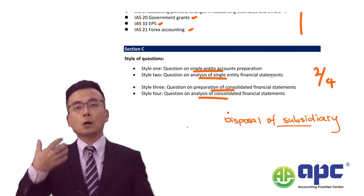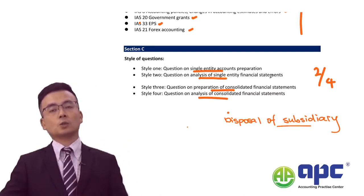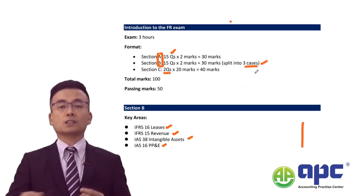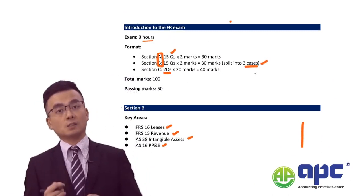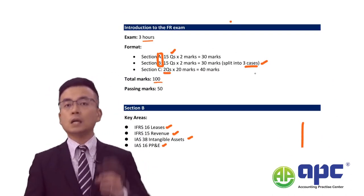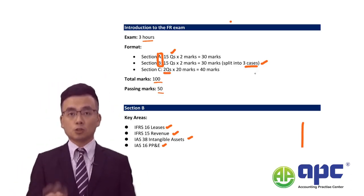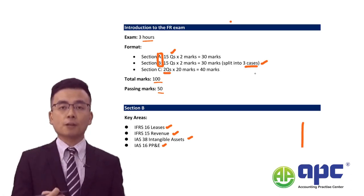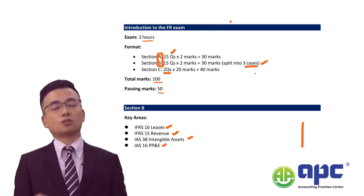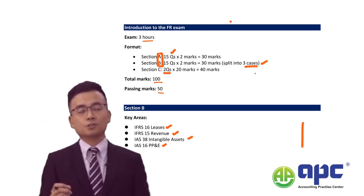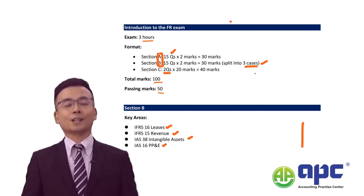In our course, I'll be taking you through a unique exam approach to tackle this written paper. The exam is three hours, giving you 180 minutes to tackle this 100-mark paper. The passing mark is 50. My top tip, similar to other papers, is never to ignore any requirements or any question — you have to attempt all of them to get an easy pass in the FR exam.